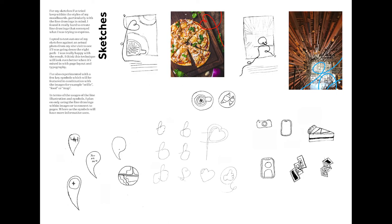My sketches have a focus on line drawings, as they will be complementary to the images. I found it hard to sketch out the lines by themselves, as they are meant to work with both the image and the guide layout. So instead, I've done some rough digital experiments. I've also tested a few different types of symbols, which will be used to visually inform the user about the location — for example, selfie, food or map.